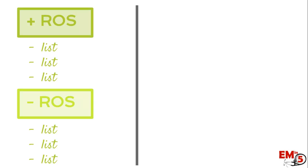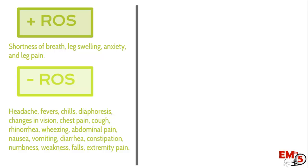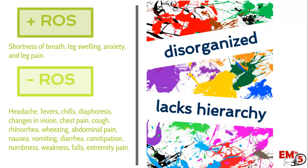There are two ways to present the rest of the patient's symptoms and review of systems. You can list all positives and negatives clumped together — for example: positive for shortness of breath, leg swelling, anxiety, and leg pain; negative for headache, fever, chills, diaphoresis, change of vision, chest pain, cough, rhinorrhea, wheezing, etc. But as a listening attending, that's just a big splatter — disorganized, lacking hierarchy. I don't know what you think is more important or where you're going with this patient.